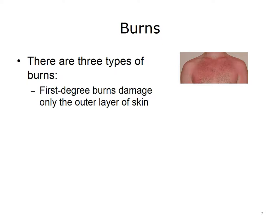Burns are a common injury to the integumentary system. Burns can be caused by scalding hot water, fires, and flammable liquids and gases. There are three types of burns depending on how severe the damage is to the skin and its underlying tissues: first degree, second degree, and third degree. First degree burns damage only the outer layer of skin and are the most shallow or superficial. First degree burns result in red, swollen, and painful skin. The burned area whitens when touched but does not develop blisters.